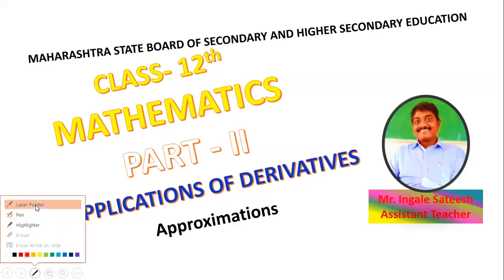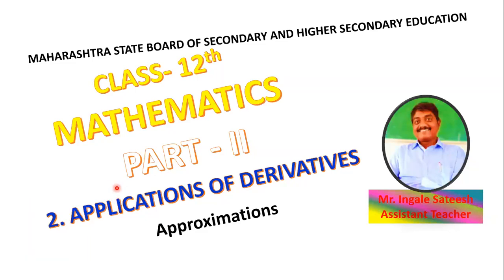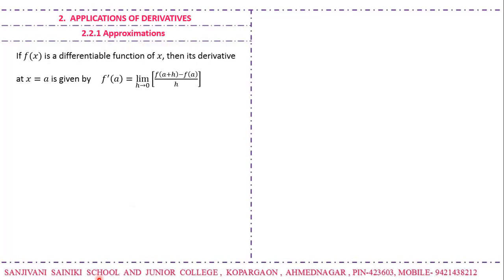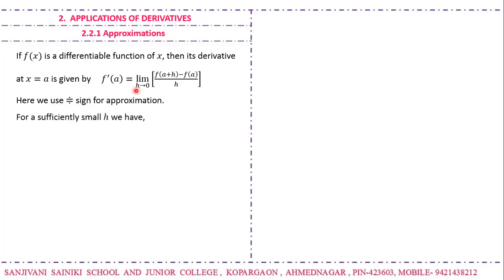Today we will see the next topic: approximations from the applications of derivatives. If f(x) is a differentiable function of x, then we can find its derivative at the particular point x = a, given by f'(a) = limit h→0 of [f(a+h) − f(a)] / h. This is known as the derivative by the first principle. The symbol with two dots is used for approximation — this means approximately equal to.